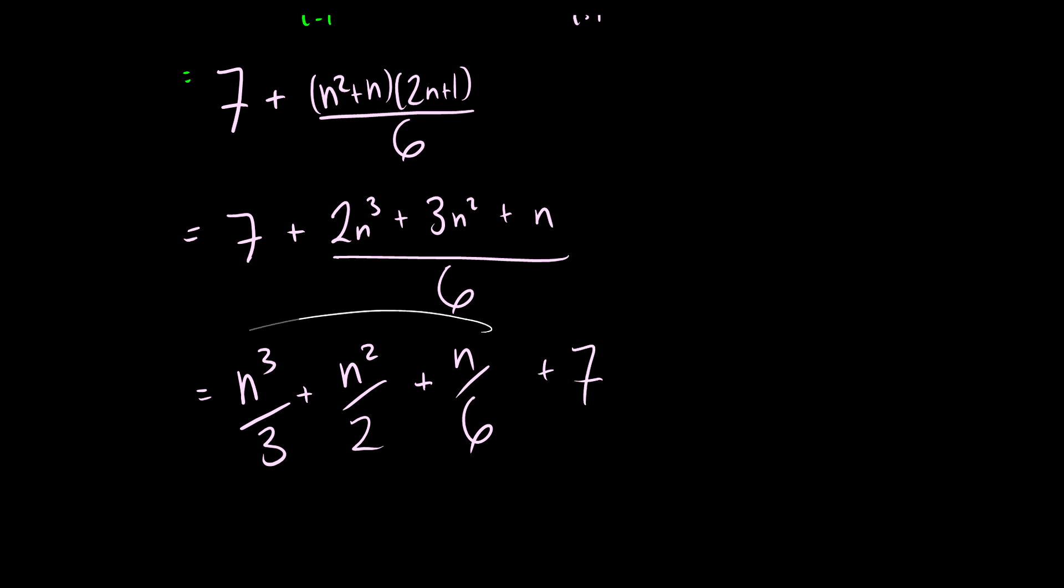And of course you can plug in some values of n to check to make sure if you're right. I did check these before and these solutions are correct. So there you go. There's some non-homogeneous recurrence relations that people sometimes forget how to solve.